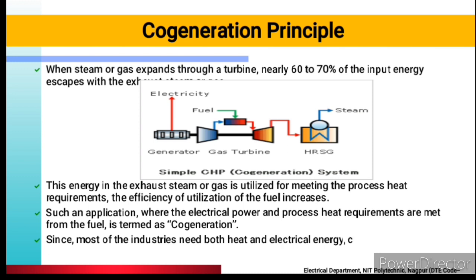Since most industries need both heat and electrical energy, co-generation can be a sensible investment for industries. Many industries use both heat and electricity, so it is a good investment. There is a one-time setup cost for co-generation, but the fuel you use is fully utilized — at least it won't be wasted — and your energy efficiency is maintained. That is an advantage of co-generation.